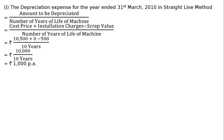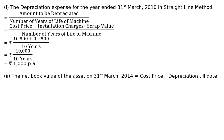The second part of the question is: the net book value of the asset on 31st March 2014, which equals cost price minus depreciation till date. We bought the machine in the year 2009. From 2009 to 2014 — 2009-10 first year, 2010-11 second year, 2011-12 third year, 2012-13 fourth year, 2013-14 fifth year — five years of depreciation will be deducted.